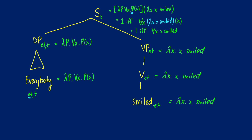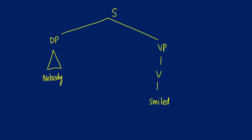With 'somebody' it's going to look very similar. I also want to do 'nobody,' because it's a little bit different. If I say 'nobody smiled,' the final truth condition is: true if and only if there does not exist an X such that X smiled. So for 'nobody,' we'd have: not exists X, then a predicate P, with lambda P as abstraction — that's what 'nobody' looks like.